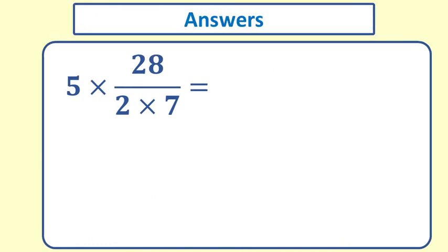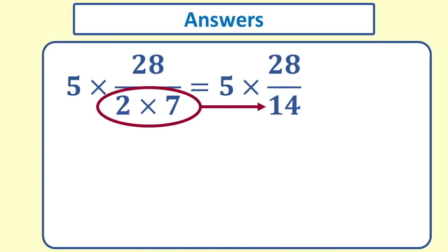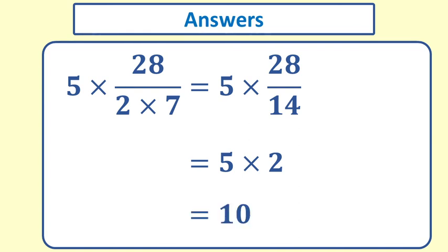And here are the answers. First we multiply the 2 and the 7 as they are grouped under the division line. This makes 5 times 28 over 14. You can simplify 28 over 14 which is also 28 divided by 14 to 2 then 5 times 2 equals 10. Alternatively you can find 5 times 28 which is 140 then divide by 14 to give 10.